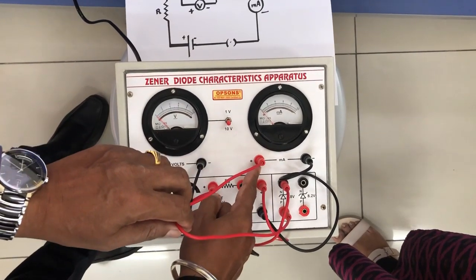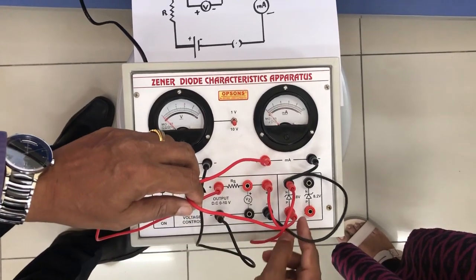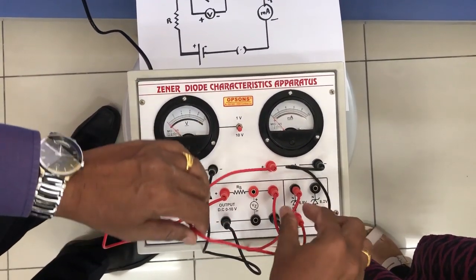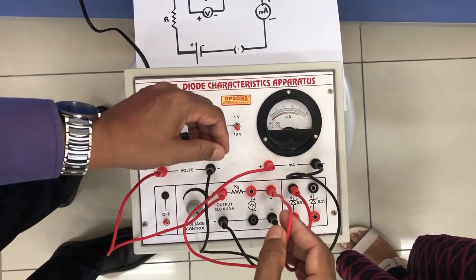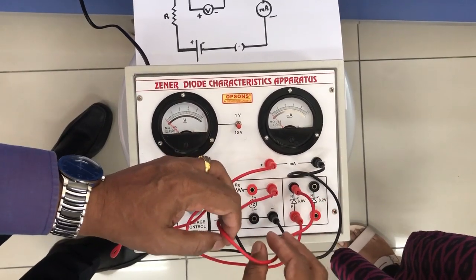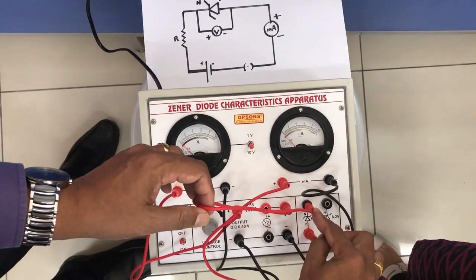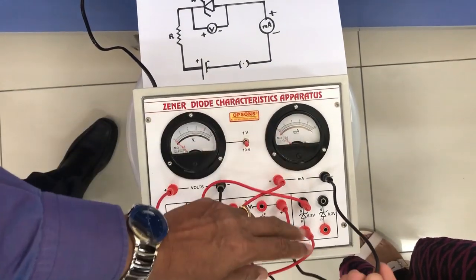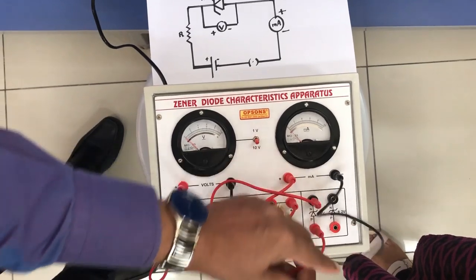The positive of the milliammeter is connected to the P side of the zener diode, and the positive of the battery is connected to the N side of the zener diode. The negative of the milliammeter is connected to the negative of the battery.